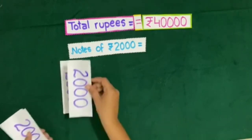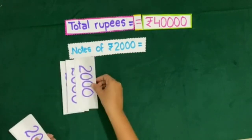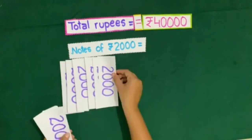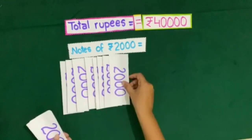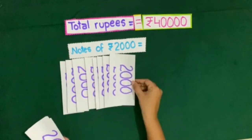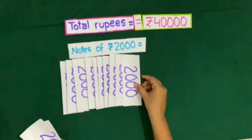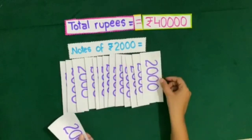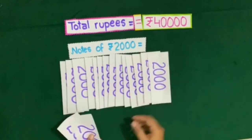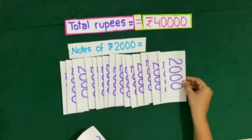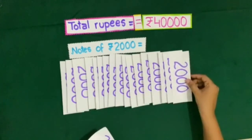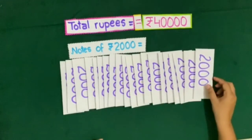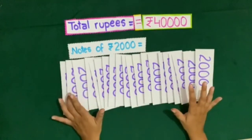So we count up in steps of 2000: 2000, 4000, 6000, 8000, 10,000, 12,000, 14,000, 16,000, 18,000, 20,000, 22,000, 24,000, 26,000, 28,000, 30,000, 32,000, 34,000, 36,000, 38,000, and 40,000. So this is 40,000 rupees.